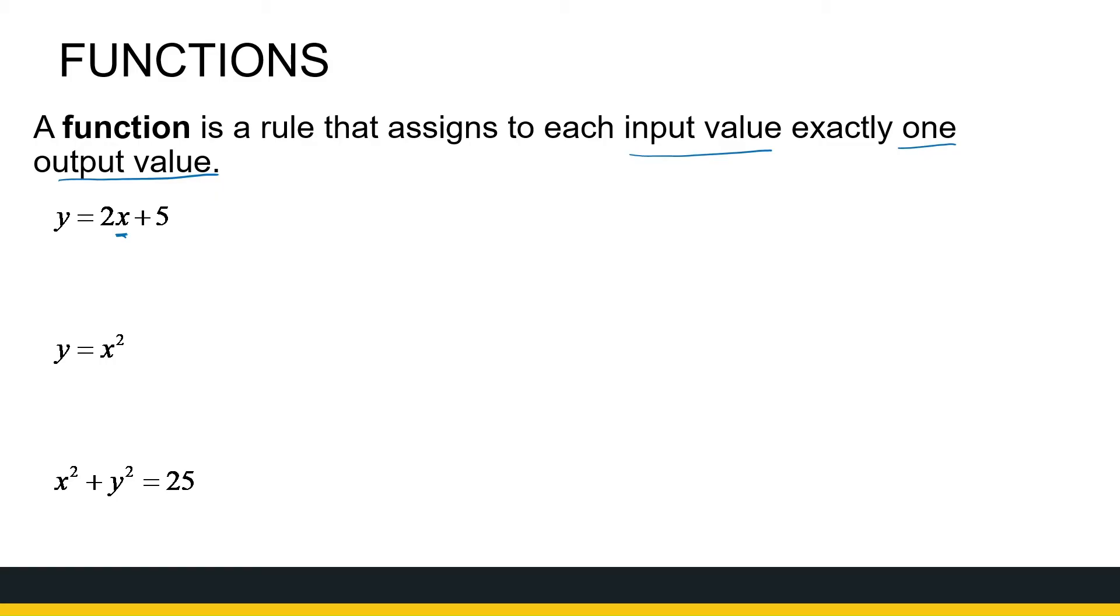In this first example, y is a function of x because each x input value, each value I choose for x will result in only one value for y. For example, if I pick the number 7, 7 times 2 is 14 plus 5 is 19. I do not get two possible values for y. Same with squaring a number. If I give you a number x equal to 2, then you know 2 squared is equal to 4. It gives me out one number. So each x value, each input value gives me a unique output value.